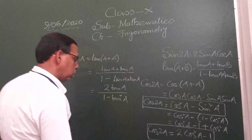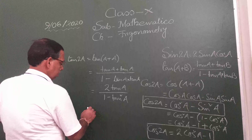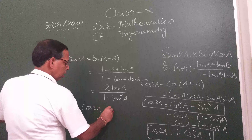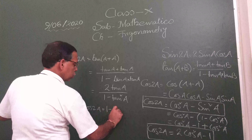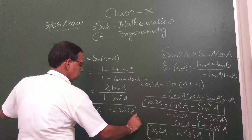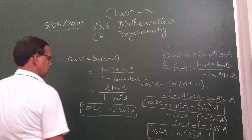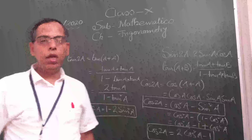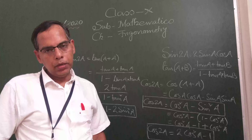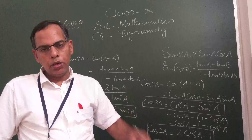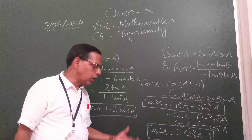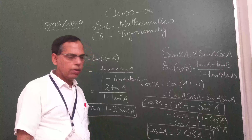One more formula is there. Cos(2a) equals 1 minus 2sin²a. Remember, dear students, if cos(2a) is there, there are three formulas, and you have to use them according to your need. Every time, all three will not be needed. So according to your need, you have to use it. This is what we got last day plus one more formula I have added today.